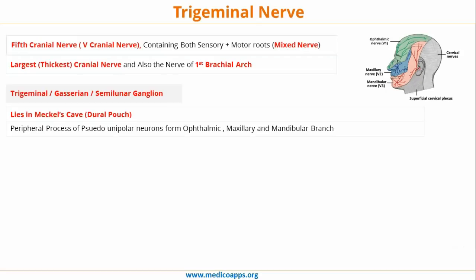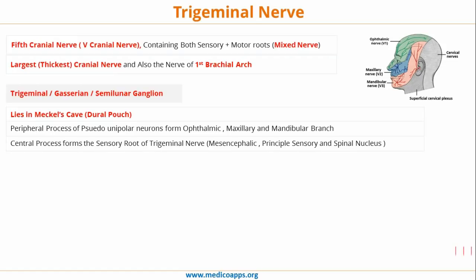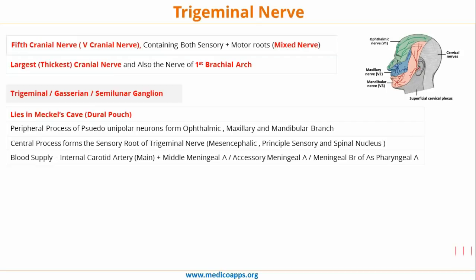V1, V2, and V3 — the ophthalmic, maxillary, and mandibular nerves — carry sensations from their respective divisions and end up in the trigeminal ganglion. From the trigeminal ganglion, central processes from the sensory root enter the pons via three nuclei: the mesencephalic, principal sensory, and spinal nuclei. Blood supply to the trigeminal ganglion is mainly via the internal carotid artery, but also the middle meningeal artery, accessory meningeal artery, and the meningeal branch of the ascending pharyngeal artery.